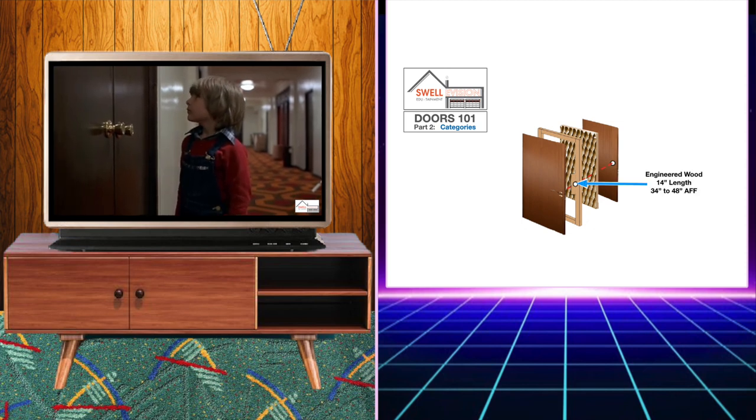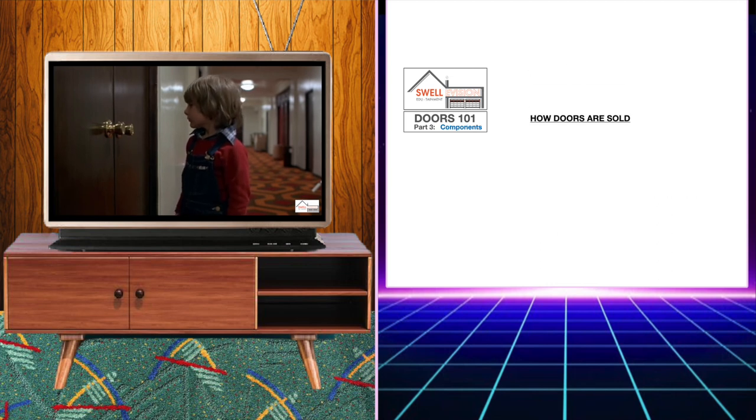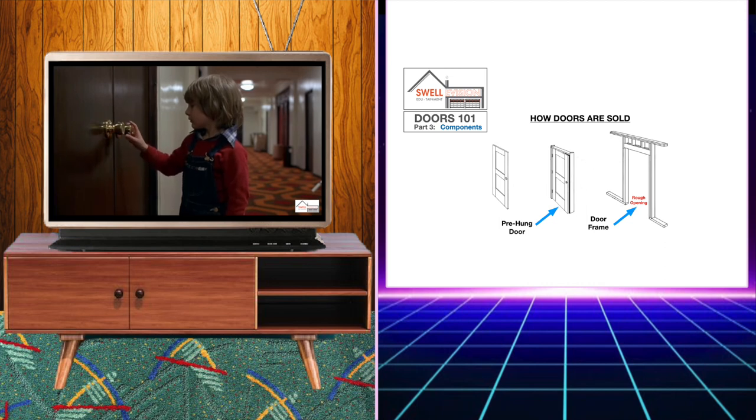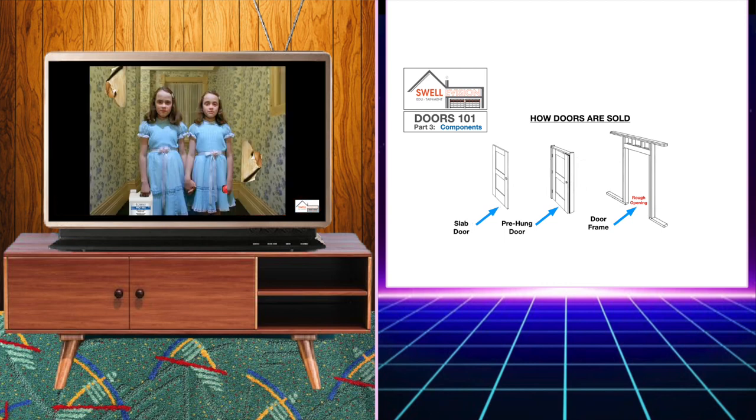Doors can be purchased as pre-hung or slab. Pre-hung doors come with hinges already attached to a frame and have a hole already bored for the door handle. Slab doors do not have hinges installed and may or may not have a hole already bored for the door handle.